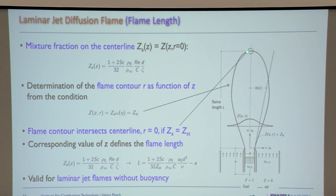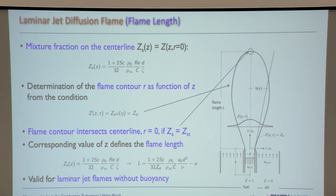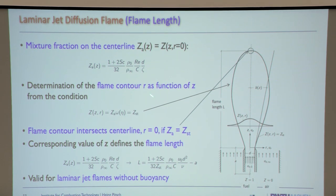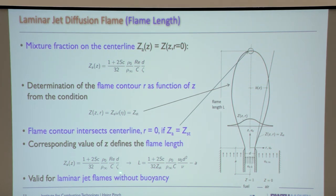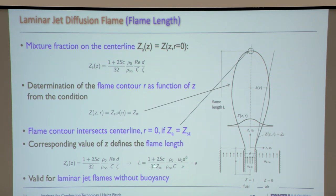To find the flame length, we set the mixture fraction equal to the stoichiometric value and solve for z, which we call l, the flame length. The flame closes exactly at stoichiometric conditions because that's where the reaction zone is. This gives l/d, the non-dimensional flame length, which turns out to be proportional to the Reynolds number.